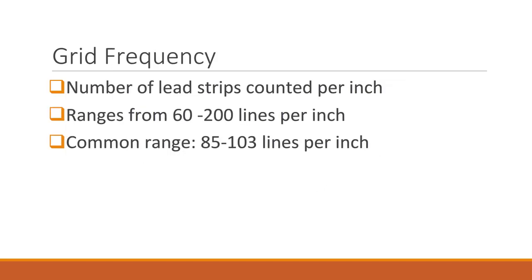Another term to be familiar with is grid frequency. Grid frequency is the number of lead strips counted per inch and ranges from 60 to 200 lines per inch. The common range that we see in the clinical setting ranges from 85 to 103 lines per inch. Both the grid ratio and the grid frequency are often listed on the grid label.